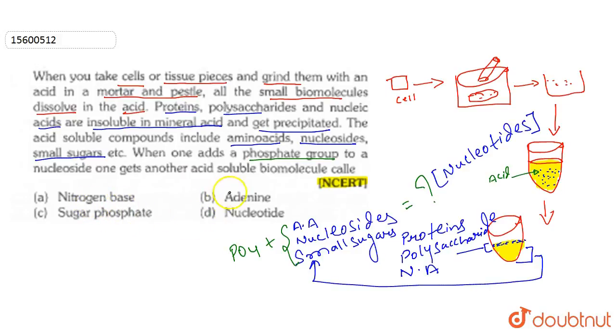A. nitrogen base, B. adenine, C. sugar-phosphate, D. nucleotide. So what is our answer? When we add phosphate to nucleoside, we get nucleotide. So this is the right answer. Okay? Thank you.